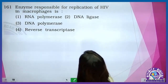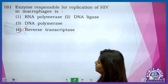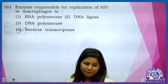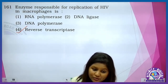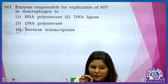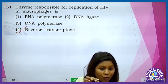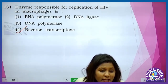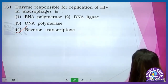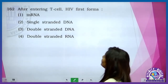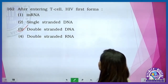The enzyme responsible for the replication of HIV is reverse transcriptase. It is responsible for the RNA to undergo the replication process to form DNA — a single stranded RNA forms double stranded DNA. After entering helper T cells, HIV forms first the double stranded DNA.